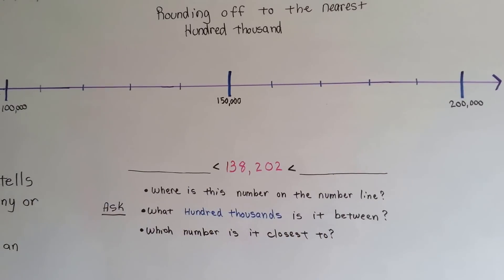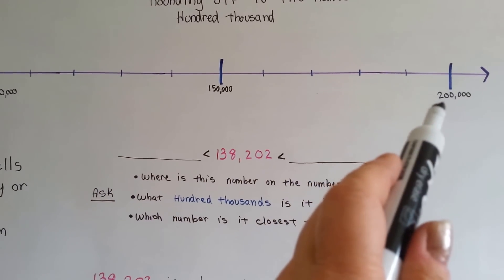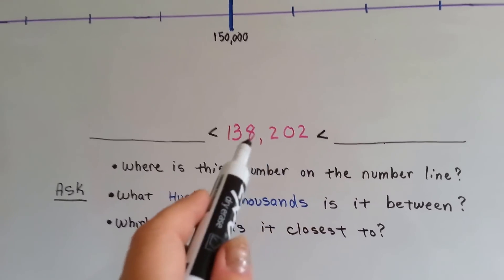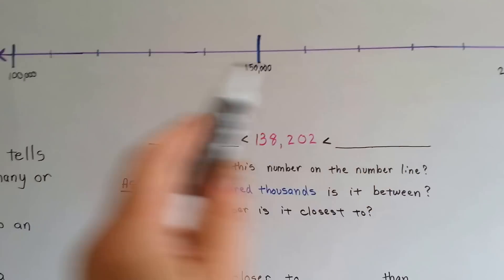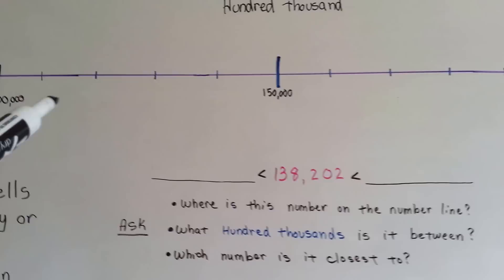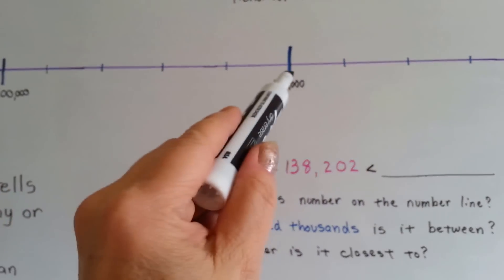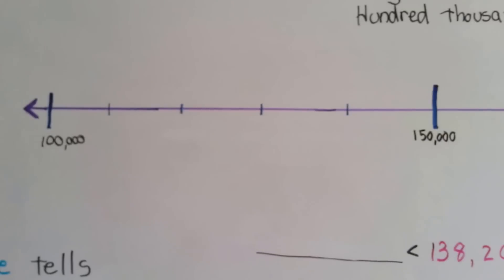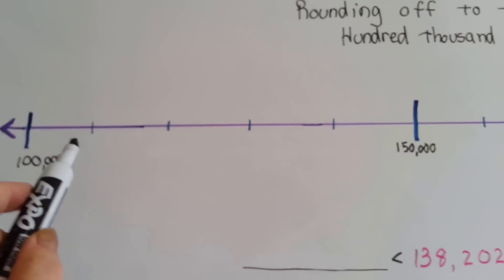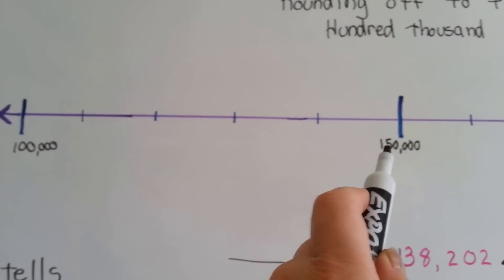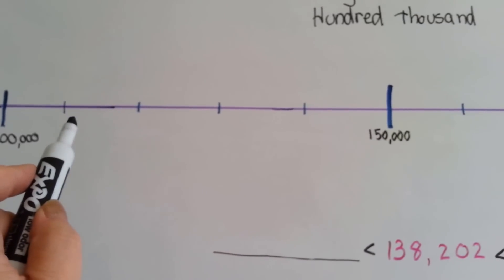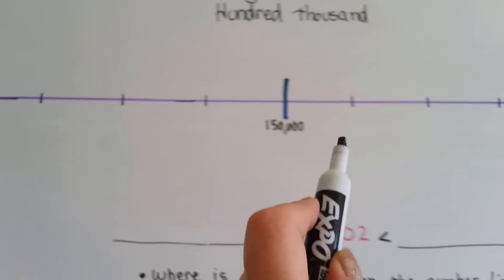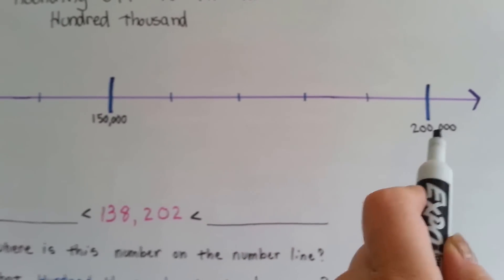We have a number line right here. Here's 100,000, here's 150,000, and here's 200,000. See this pink number right here — 138,202. We're going to try to figure out where it would fall on the number line. If you look at these little lines, they're in between the 100 and the 150. Each of these little marks, if you look — this is 100, that's 150 — so that means this is 110,000, 120,000, 130,000, 140,000, 150,000, 160,000, 170,000, 180,000, 190,000, 200,000.